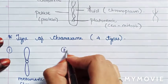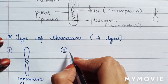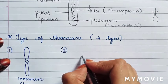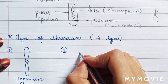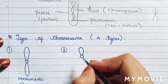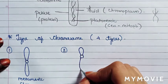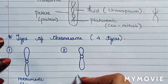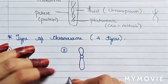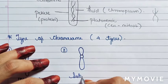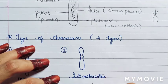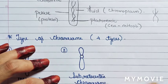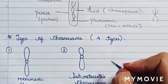The second type: the centromere is present at one side, where a small chromosomal arm is present on one side and a large chromosomal arm is present on the other side. This is known as a sub-metacentric chromosome.